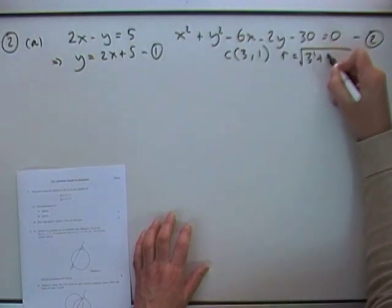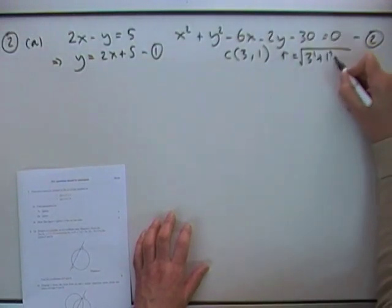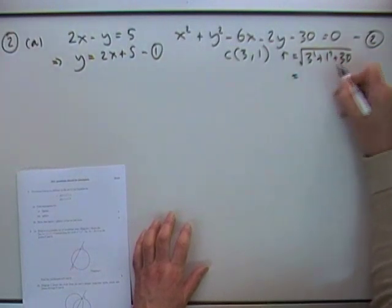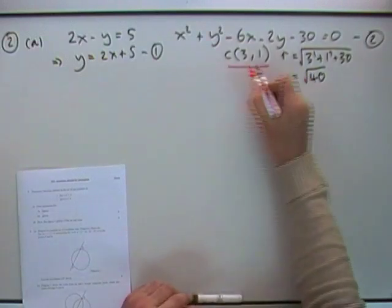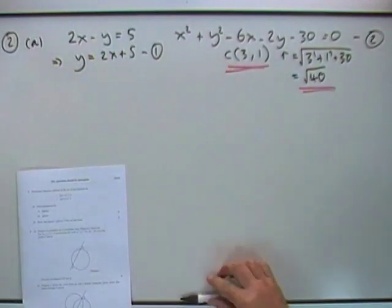So what have I got? 3 squared plus 1 squared take away the negative 30, so plus 30. So that's 10 and 30, so that's root 40. I'll not simplify it yet, just in case I do need it. I don't need it in part A, but it's there and ready and waiting.